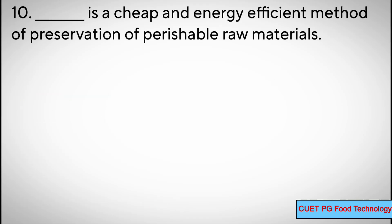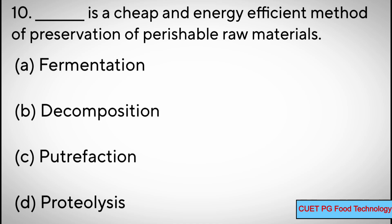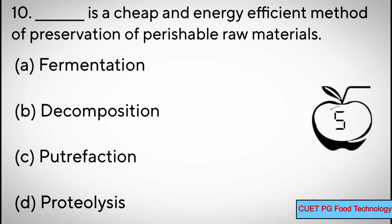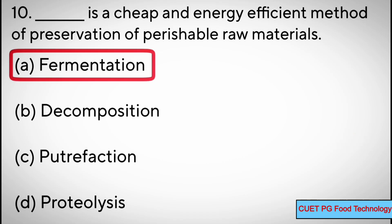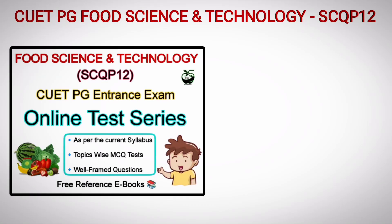Question number ten: dash is a cheap and energy efficient method of preservation of perishable raw materials — options: A) fermentation, B) decomposition, C) ultrafaction, D) proteolysis. Correct answer: A) fermentation.